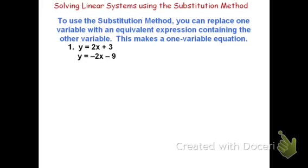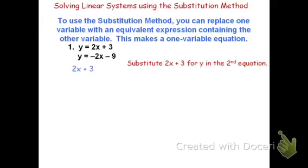For example, if I have y equals 2x plus 3 and y equals negative 2x minus 9, I can use substitution to solve this system. I can rewrite it as one equation with one variable. I substitute the 2x plus 3 in place of y in the second equation. If 2x plus 3 is equal to y, I can replace y in the second equation. Therefore, I get 2x plus 3 equals negative 2x minus 9.